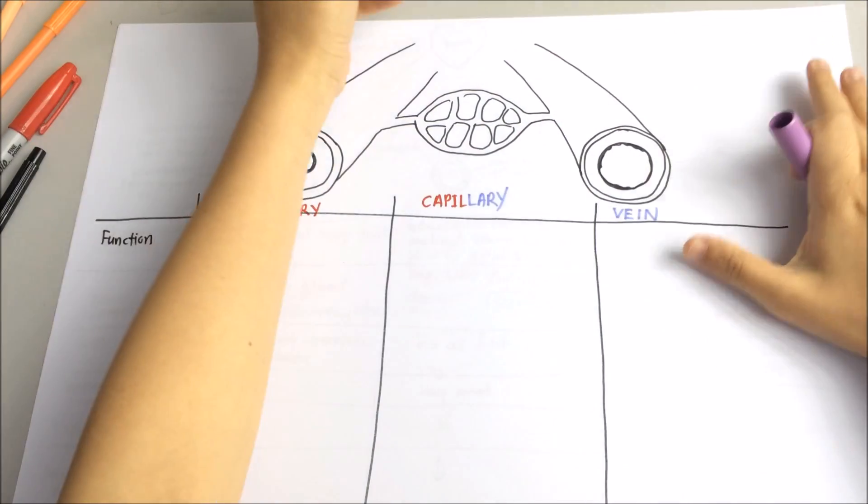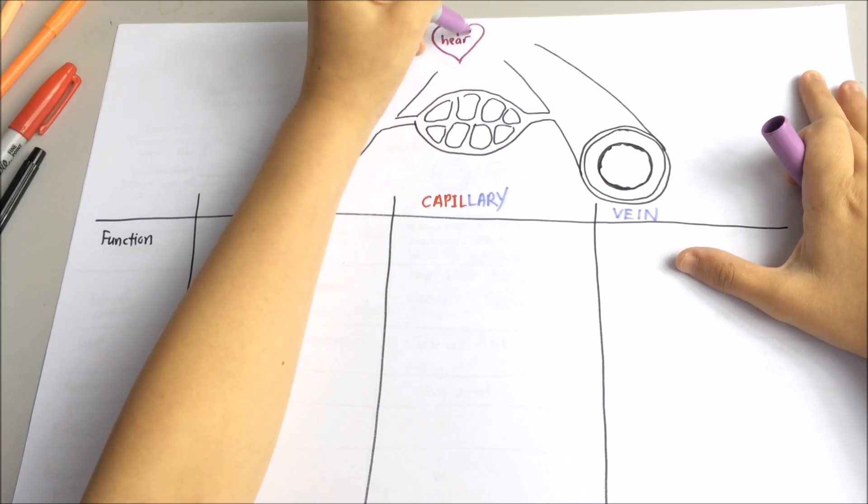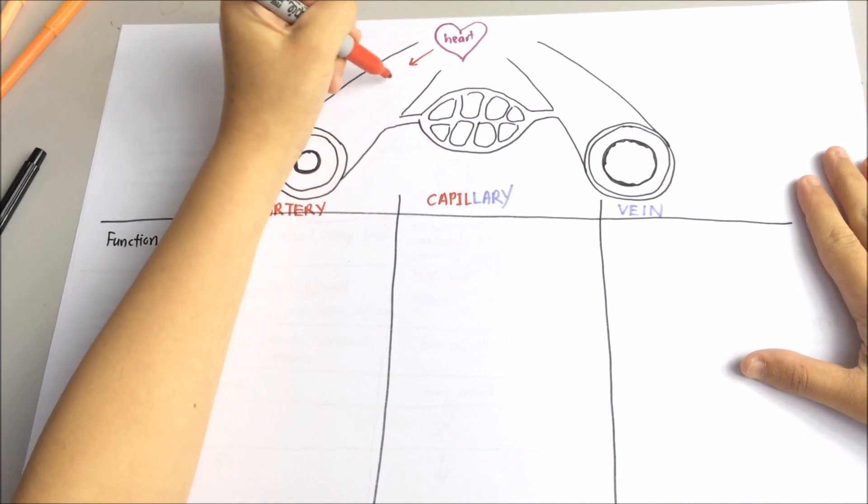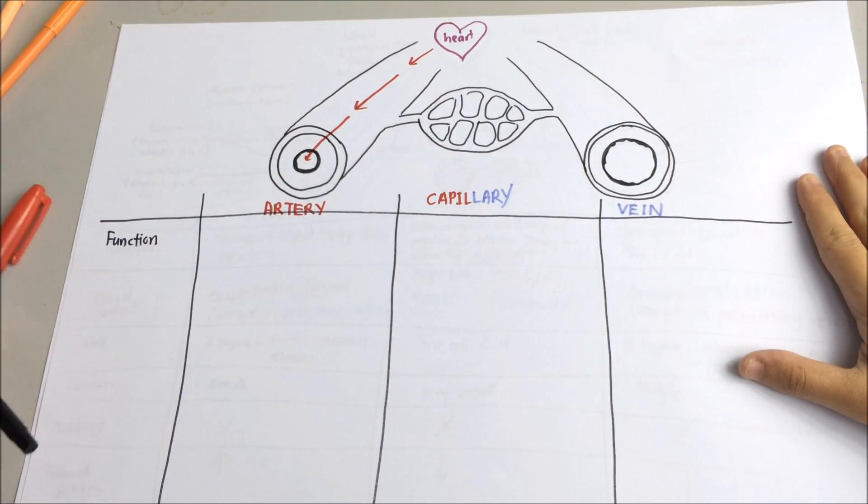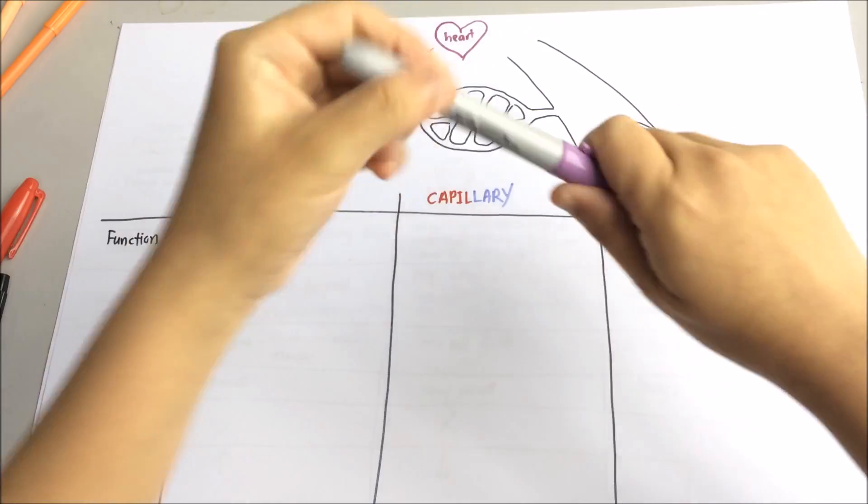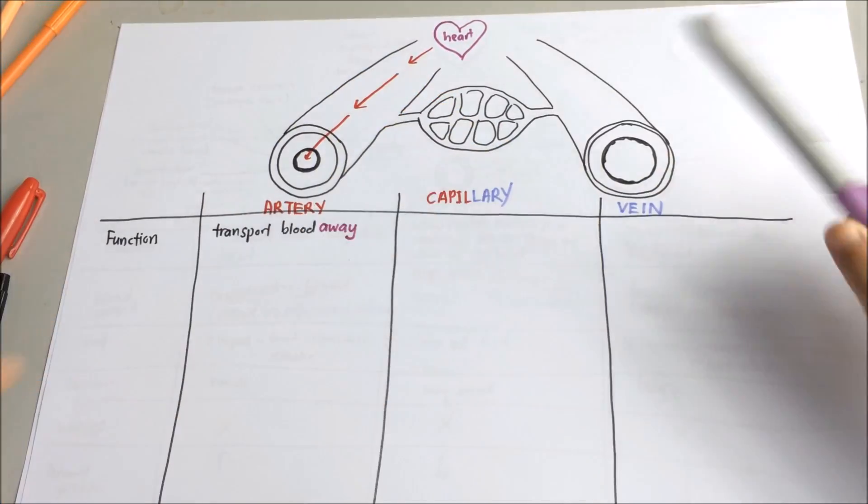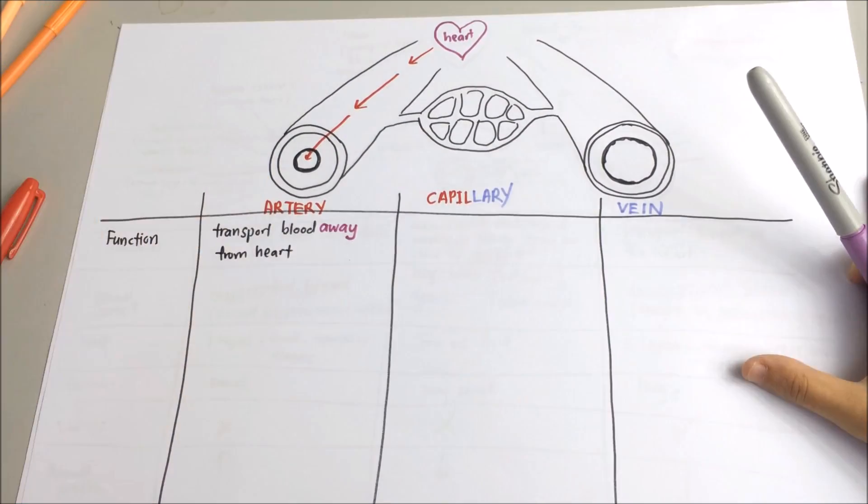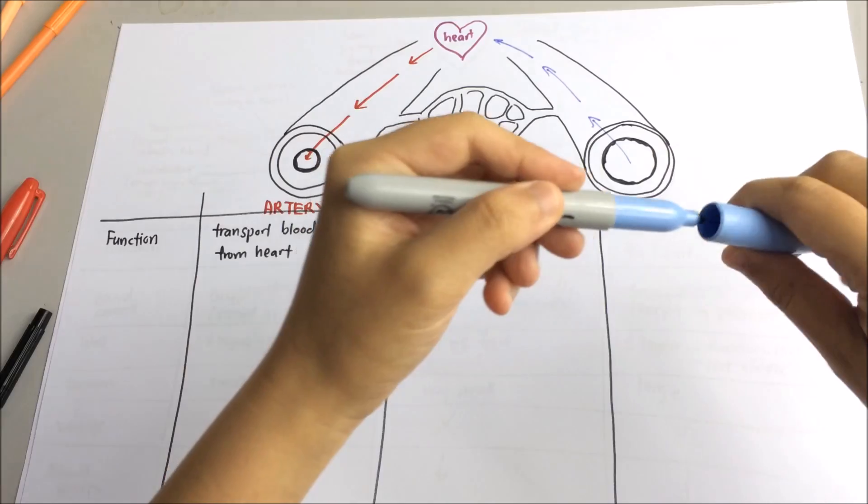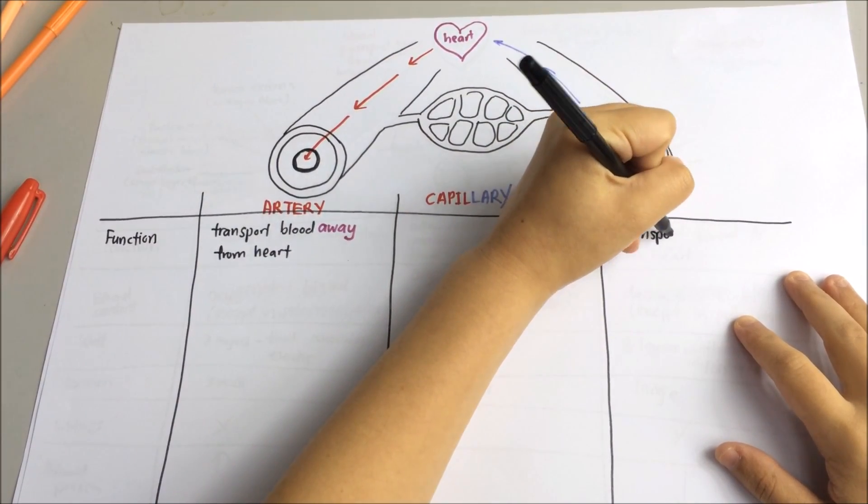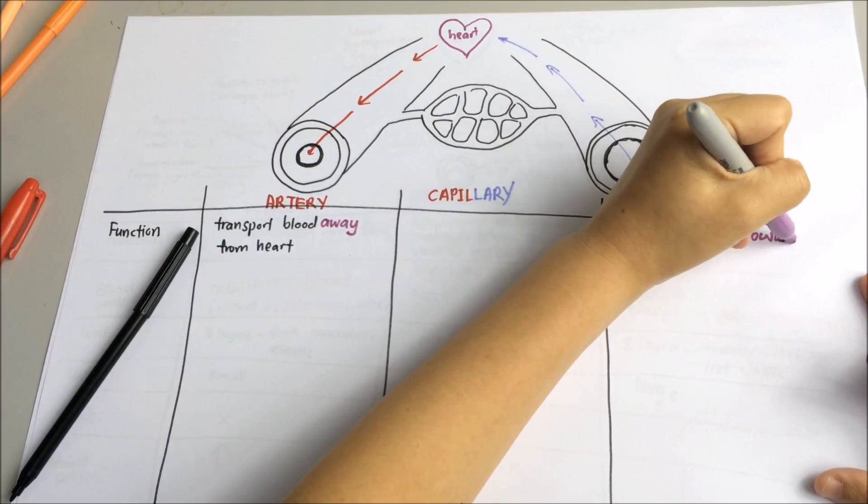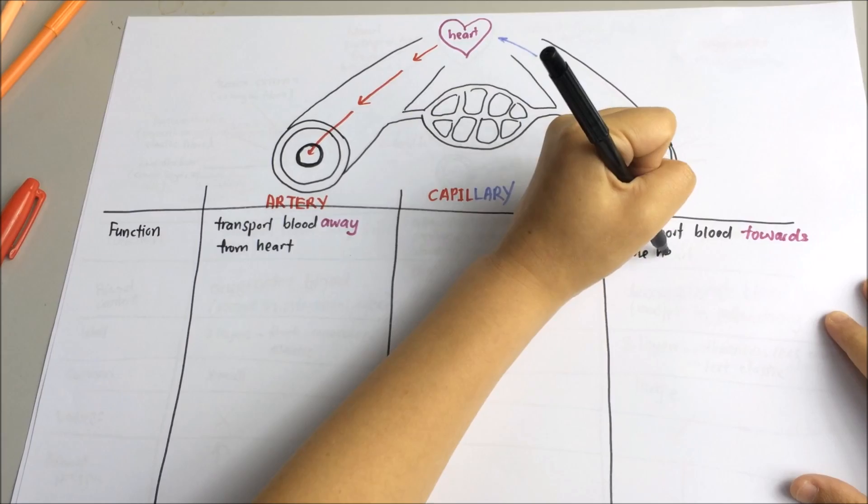Remember artery is away from heart. It transports blood away from heart. Vein carries the blood back to the heart. So always remember, artery away from heart, vein towards the heart.